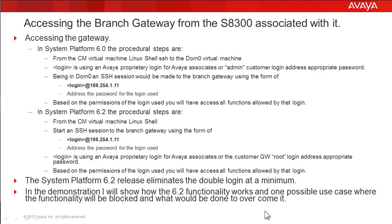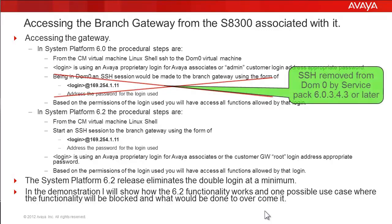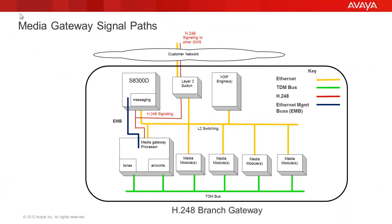Please note, the steps listed in the 6.0 section can be used up to installing System Platform Service Pack 6.0.3.4.3 or later, as listed if you need to access a gateway in the System Platform 6.0 environment. That service pack removed the outbound SSH capability from domain 0.